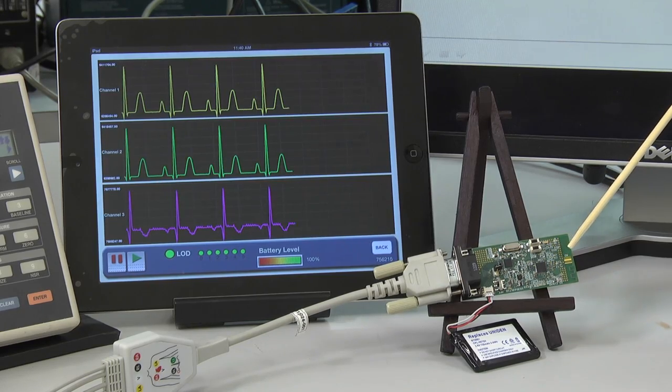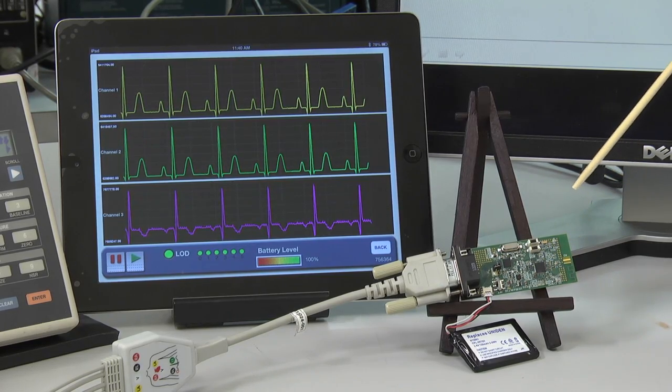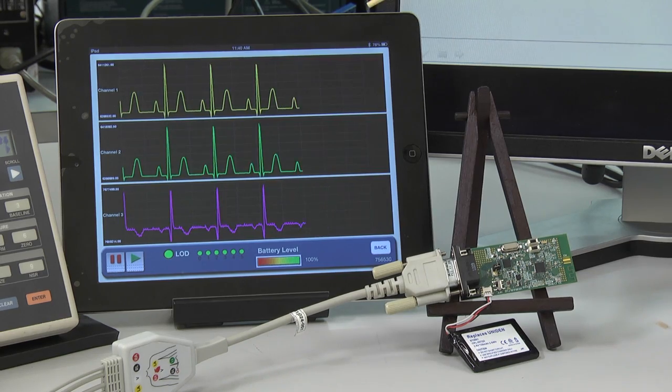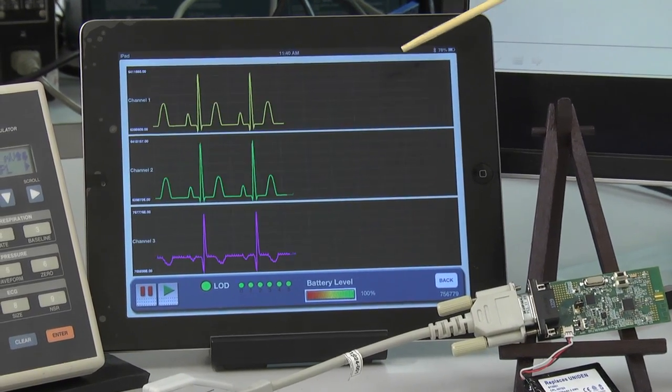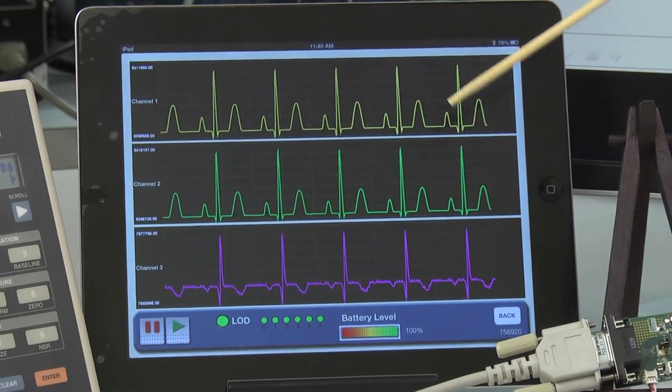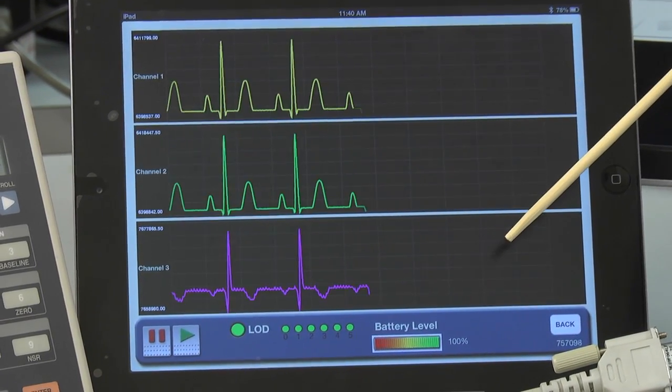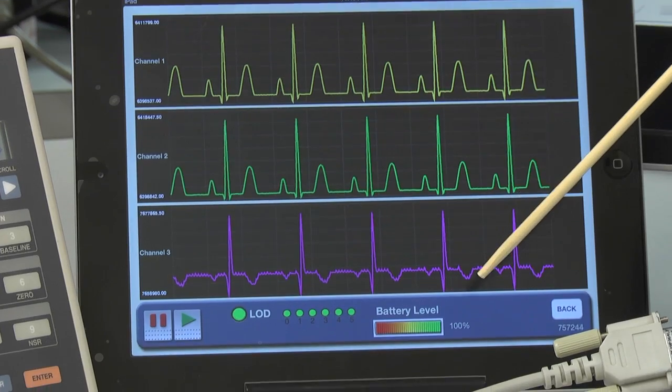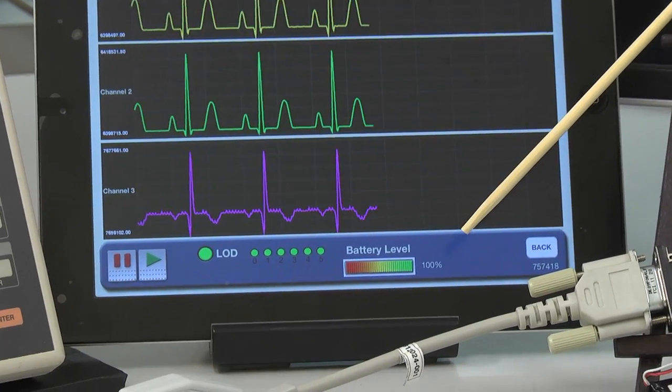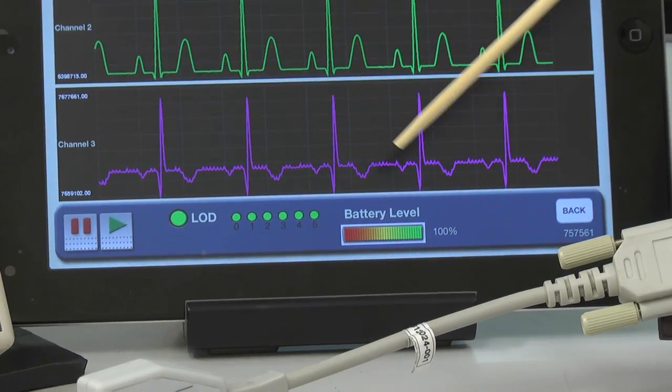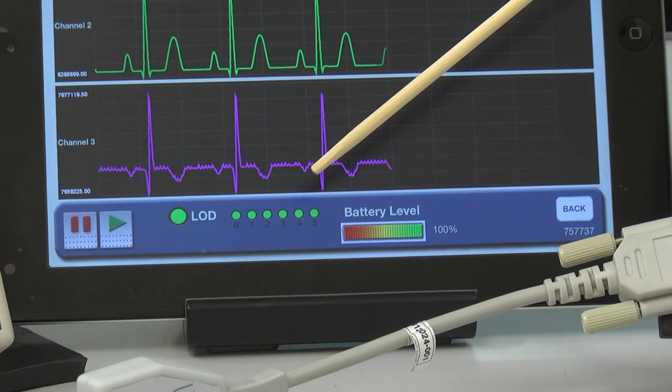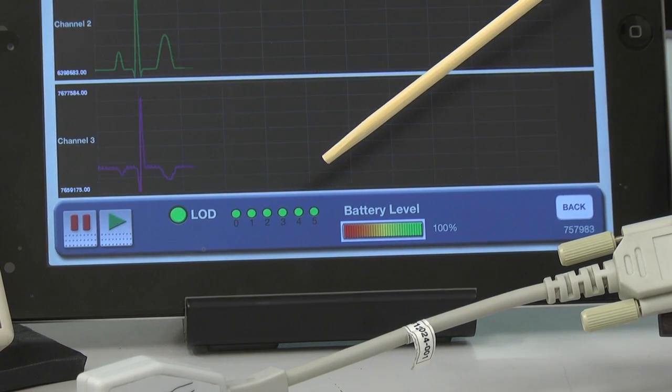So this data is transferred wirelessly and is displayed using this iPad. It's a three-channel demo, so you can see here is channel 1, channel 2, and channel 3. At the bottom of the iPad is a battery level that tells you how long the battery life will last. And to the very left, we have a lead-off detection which will tell you if an electrode has been disconnected.